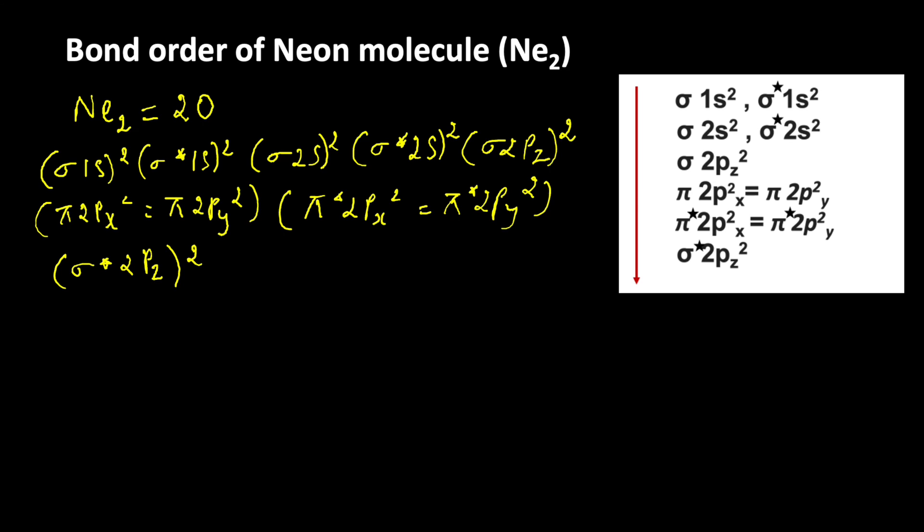Now, count the electrons: 2, 4, 6, 8, 10, 12, 14, 16, 18, 20. So 20 electrons are present.